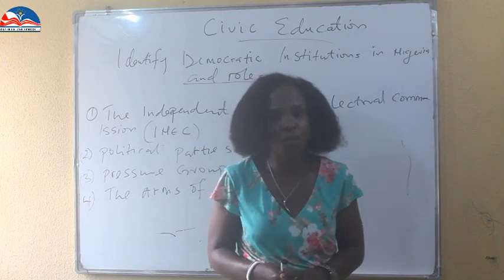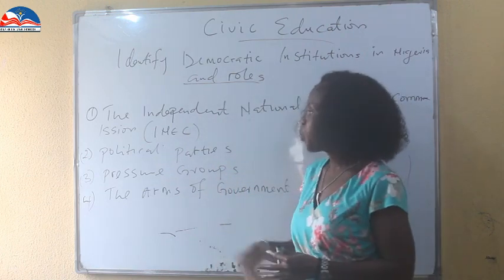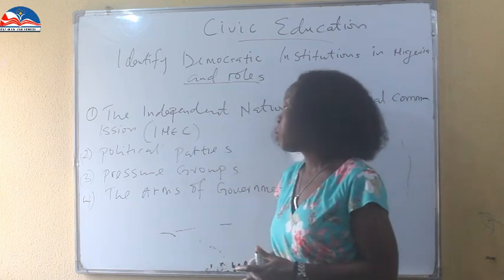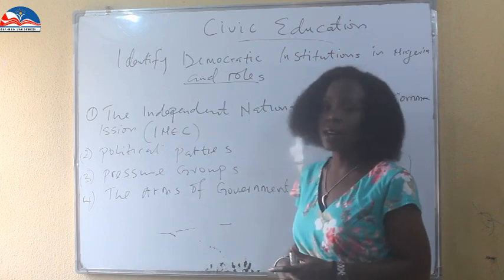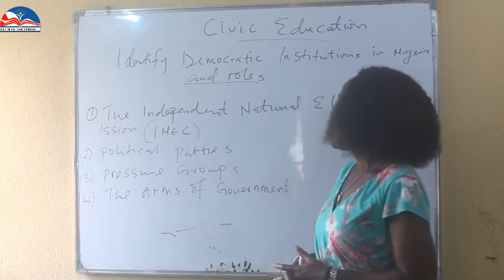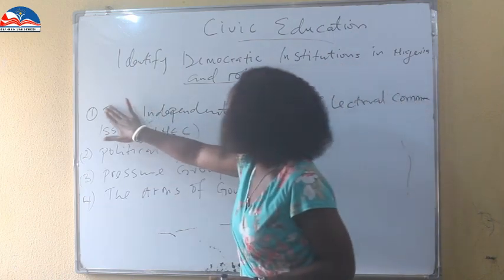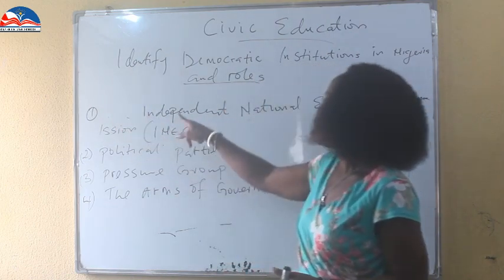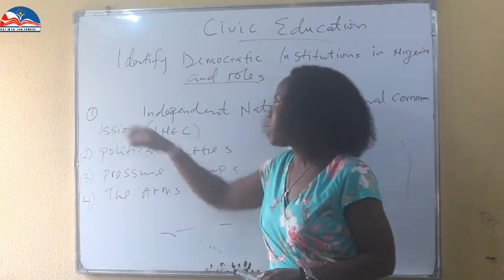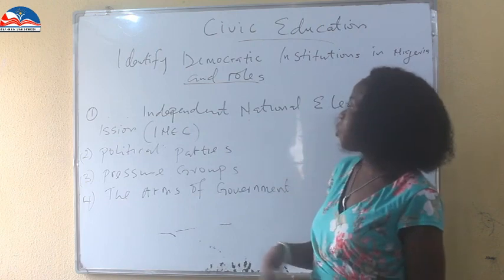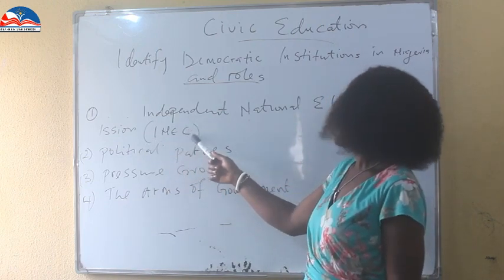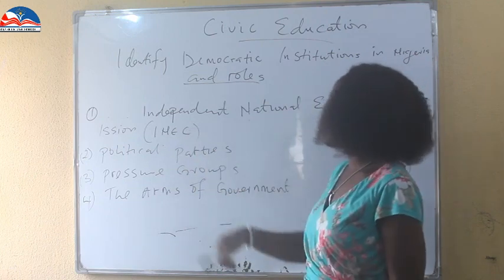What are some of the institutions that play a big role in a democratic setting? We have four: INEC, political parties, pressure groups, and the arms of government. What does INEC mean? INEC means the Independent National Electoral Commission — I for Independent, N for National, E for Electoral, and C for Commission.